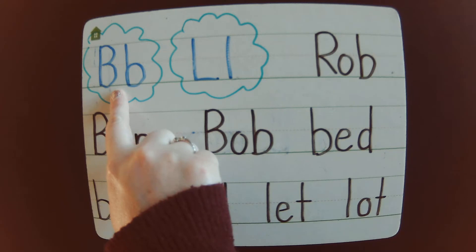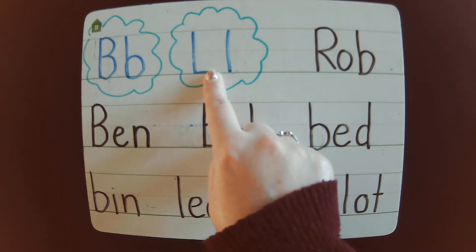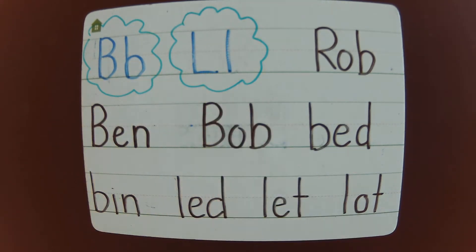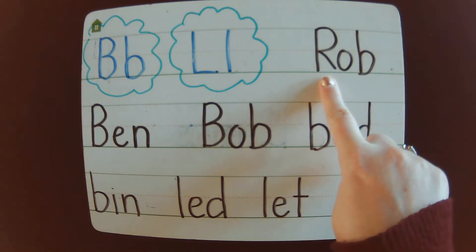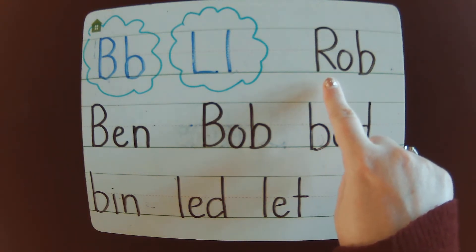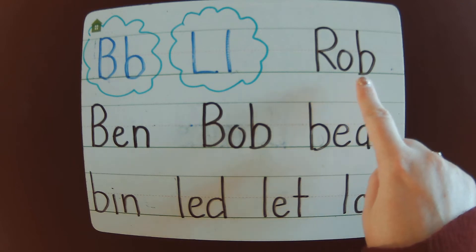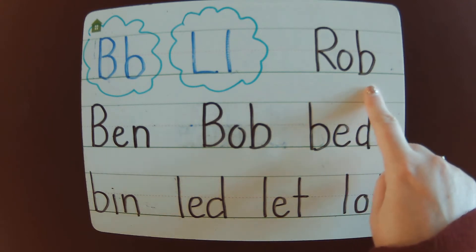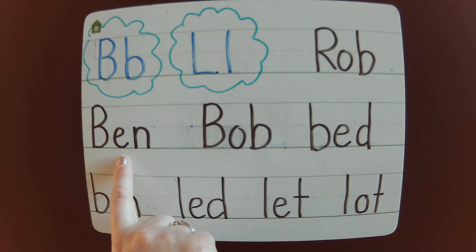So, B says B, L says O. Here's one of the names in this story. Can you help me sound it out? Er. Ob. Rob. There's another name in the story. B. N. Ben.